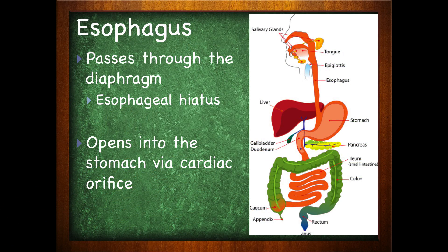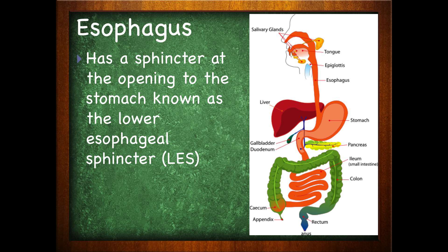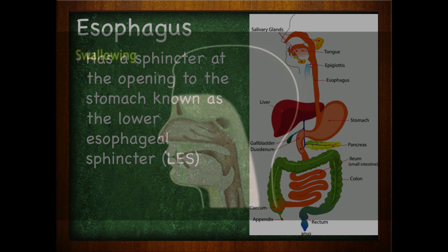The esophagus passes through the diaphragm through something called the esophageal hiatus. It opens into the stomach via the cardiac orifice, and has a sphincter at the opening to the stomach known as the lower esophageal sphincter.